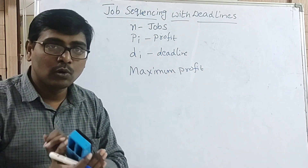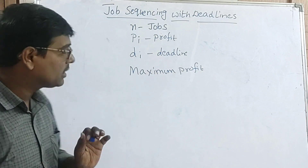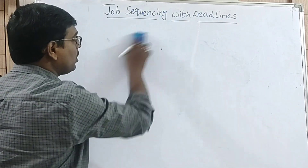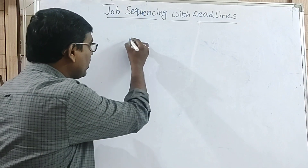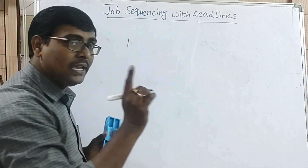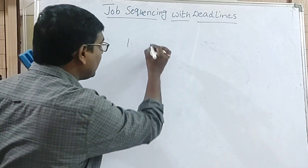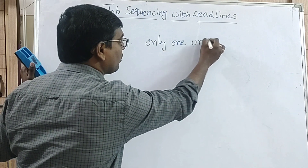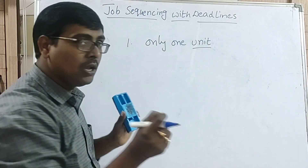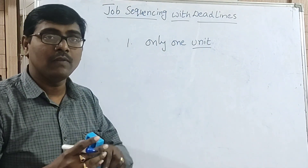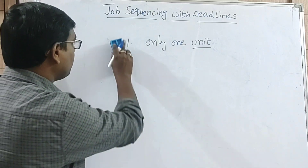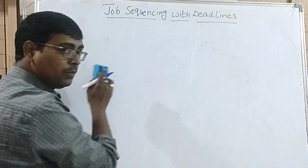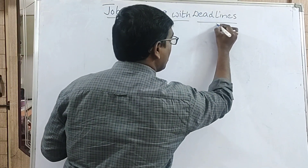This is the concept of job sequencing with deadline. Now first I am explaining an algorithm, after that we will move to an example. Before explaining the algorithm, you have to know some important points. The main important point is each job requires only one unit of time for their completion.